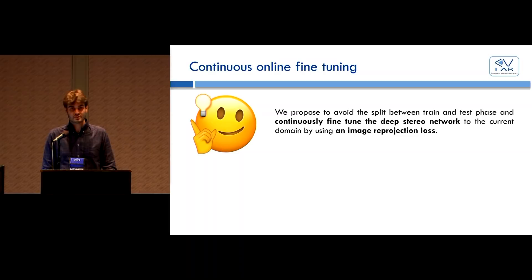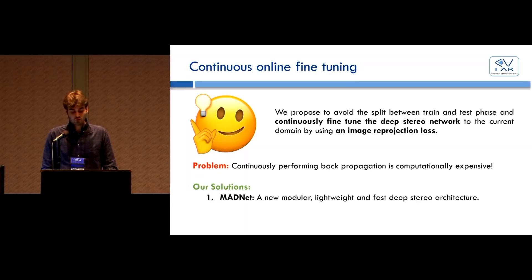Since we cannot rely on the offline availability of images for any target environment, we propose to avoid the split between the training and the test phase and continuously fine-tune online a deep stereo network to the current domain as soon as new frames are sensed. Following this paradigm, the network will be able to tune its parameters to the current environment, and the model will be able to self-improve its prediction over time without the need of ground-truth. Continuously training the network can be computationally expensive, however. To address this limitation in this work, we introduce a new modular, fast, and accurate architecture for stereo depth estimation called MADNet and an approximated training schema that we call MAD.